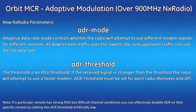Adaptive modulation is a feature included in the Orbit MCR 303 firmware release. Two new parameters are added to the NX radio configuration: ADR mode and ADR threshold, which stands for adaptive data rate and threshold, respectively. ADR mode has two settings — 125 to 250 kilobits per second and 500 to 1250 kilobits per second. These are modem speeds for the NX radio interface.